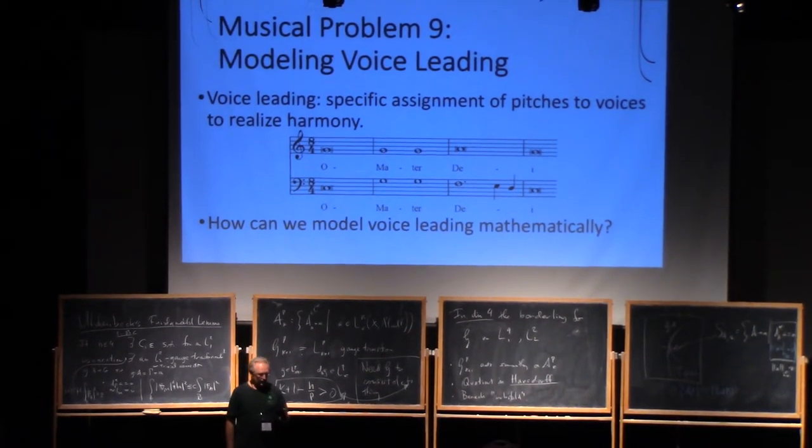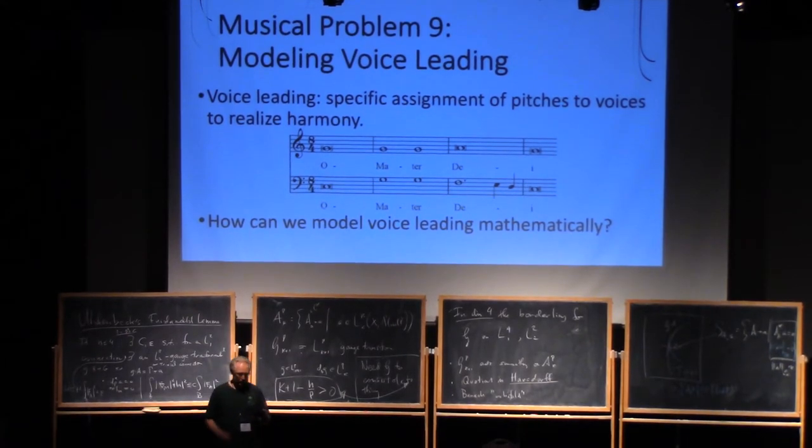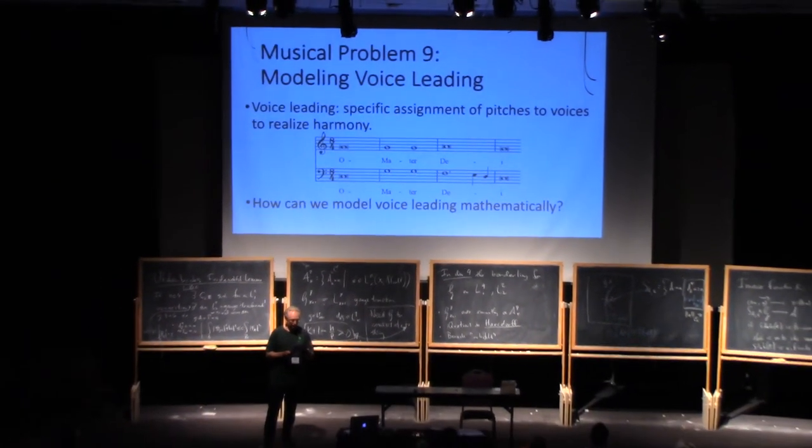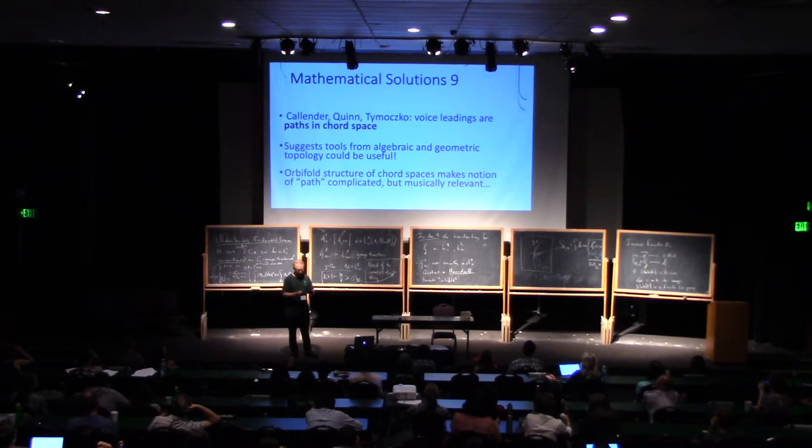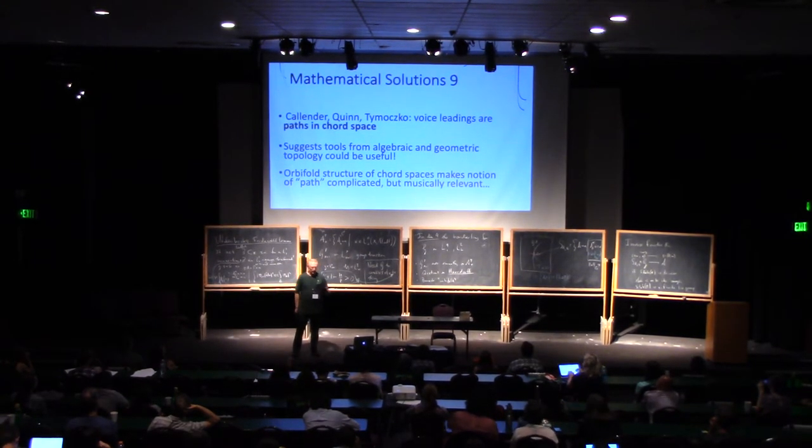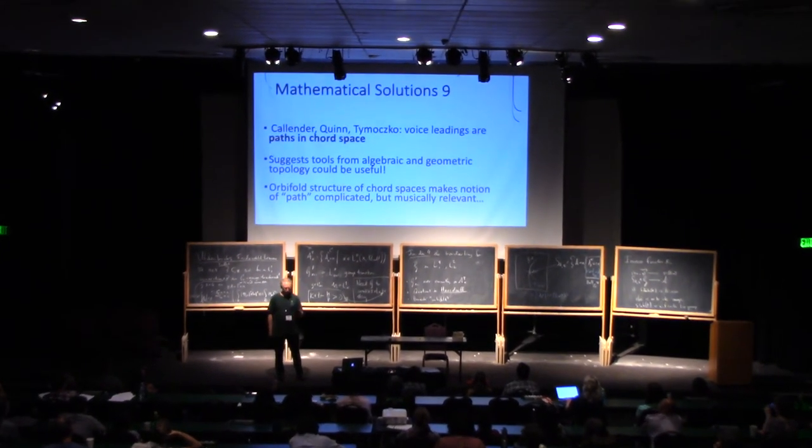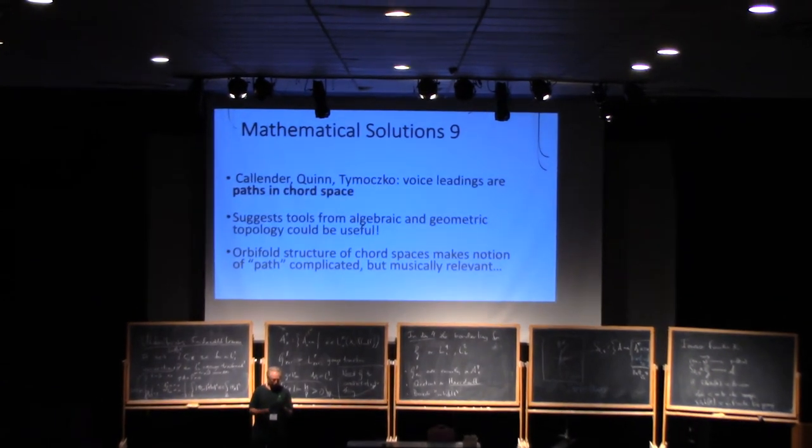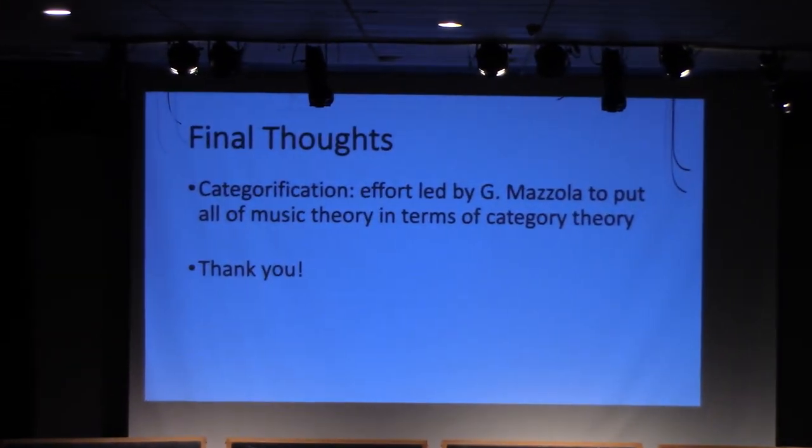Voice leading is the assignment of particular pitches to voices in order to form sequences of specific chords. It's an old issue in music theory. Josquin composed the excerpt shown here over 500 years ago, and it shows some interesting voice leading. Can we model voice leading mathematically? Of course. In chord spaces, voice leadings are paths, suggesting the use of topological tools. For example, path branching at singularities corresponds neatly to voice leading through chords with doublings.